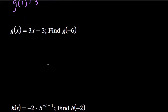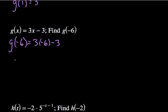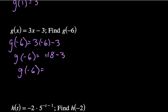This next one is pretty straightforward. g of negative 6 equals 3 times the input — I'm just using parentheses — minus 3. The input is negative 6. Notice the parentheses show that I'm not subtracting; I'm actually multiplying. 3 times negative 6 is negative 18. So, g of negative 6 equals negative 18 minus 3, which is negative 21.